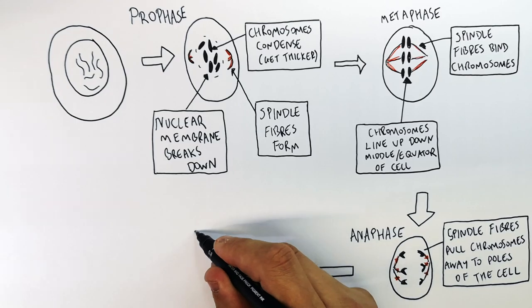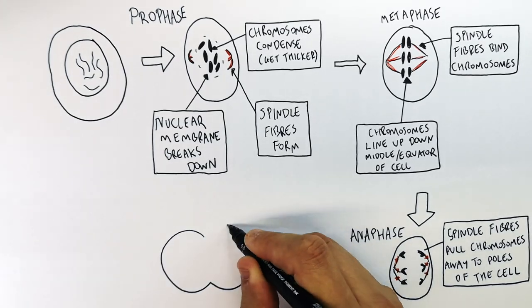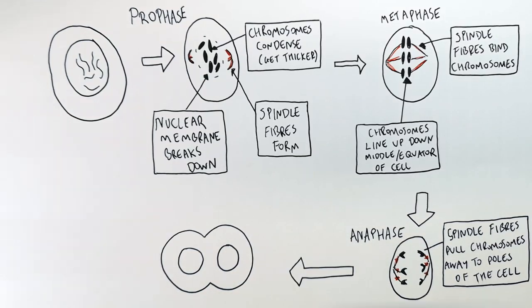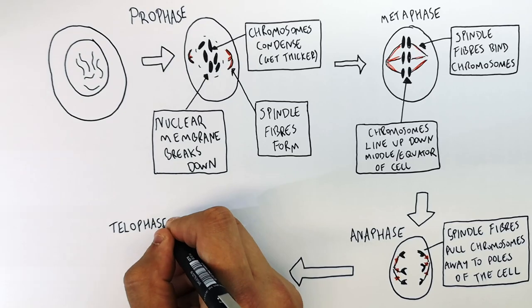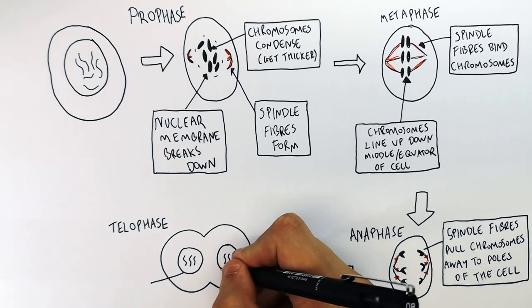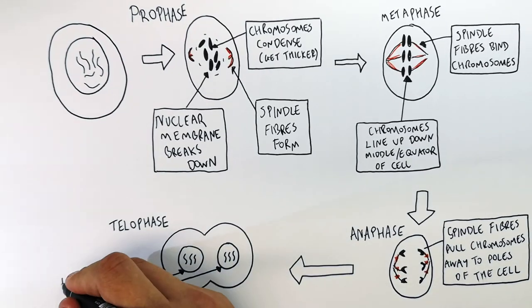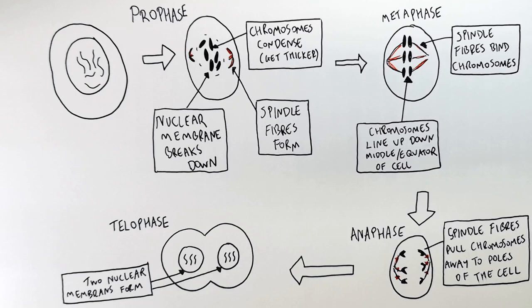When the chromosomes have reached the poles of the cell, two nuclear membranes now reform around the chromosomes. This is telophase — telophase is when two nuclear membranes form around the chromosomes. The diagram now shows the four stages of mitosis: prophase, metaphase, anaphase, and telophase — known as PMAT.